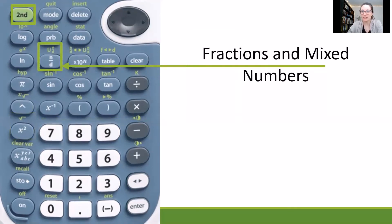For fractions and mixed numbers, you can see the blue button says n over d. Well, that means numerator over denominator. So you can use that button to create a fraction right on your screen. So for example, if I wanted to do five sixths, I could hit five, and then the n over d button, and then six.